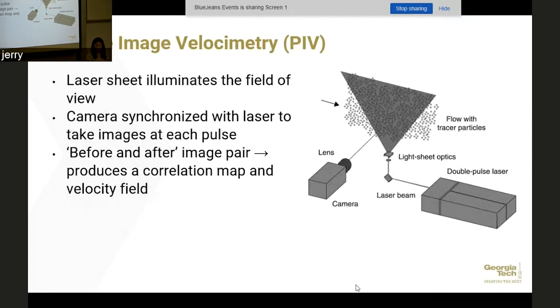All right, so the last method that I'll be talking about is particle image velocimetry. In this one you have a double pulse laser which then is shined or refracted through a series of optics to create a laser sheet that illuminates your field of view. Same with LDV you would seed the flow with tracer particles so that you can actually see where the flow is going. You have a camera that's synchronized with the laser to take images at each double pulse, so you can imagine it taking images like boom boom boom boom. You always have a pair of images together. This before and after image pair can be correlated to produce a correlation map and velocity field. You can think of it as you have your before image of particles here and then your after image and then you can kind of see how they shift.